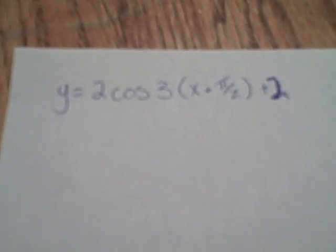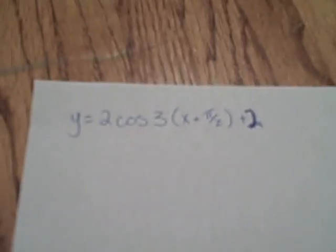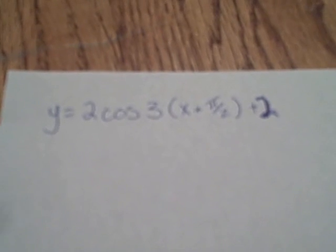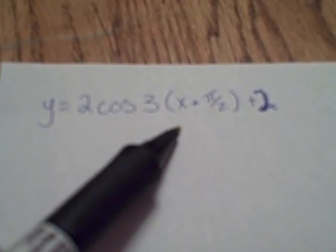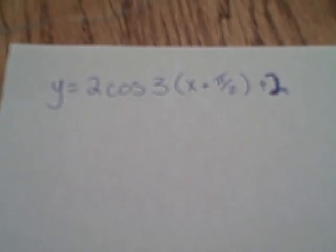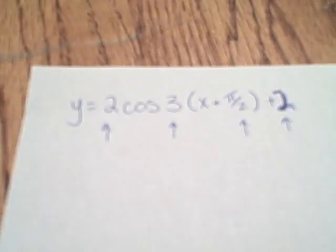All right, ladies and gentlemen, the next problem we're going to look at is graphing a cyclic function. The cosine function is what I'm going to look at right now. You can see that I've got y equals 2 cosine 3(x plus pi over 2) plus 2. Now, the first thing we want to do is make sure that we identify everything that's happening in this equation.